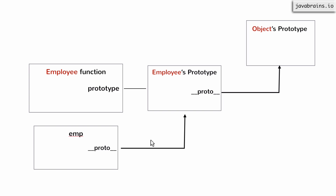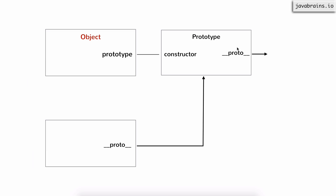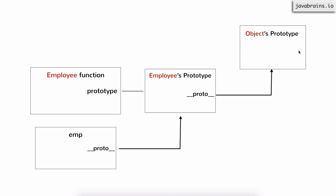Now here's an interesting question: if this hierarchy always happens, then the object's prototype is also an object — wouldn't it have a dunder proto too? Would this lookup be infinite? Well, it is not infinite because the prototype of the object has a dunder proto which points to null. This is something the JavaScript engine implements by default so that this chain does not go on forever. The global object function has a prototype, and that prototype has a dunder proto which points to null — so it doesn't go beyond this. This dunder proto points to null, so there is no opportunity for the JavaScript engine to look up further.